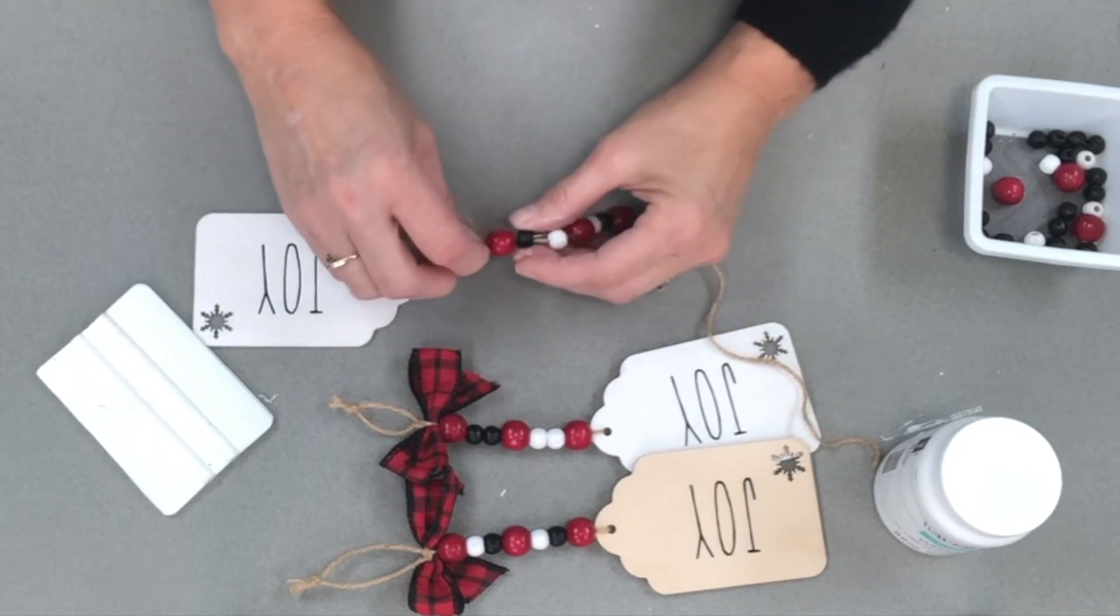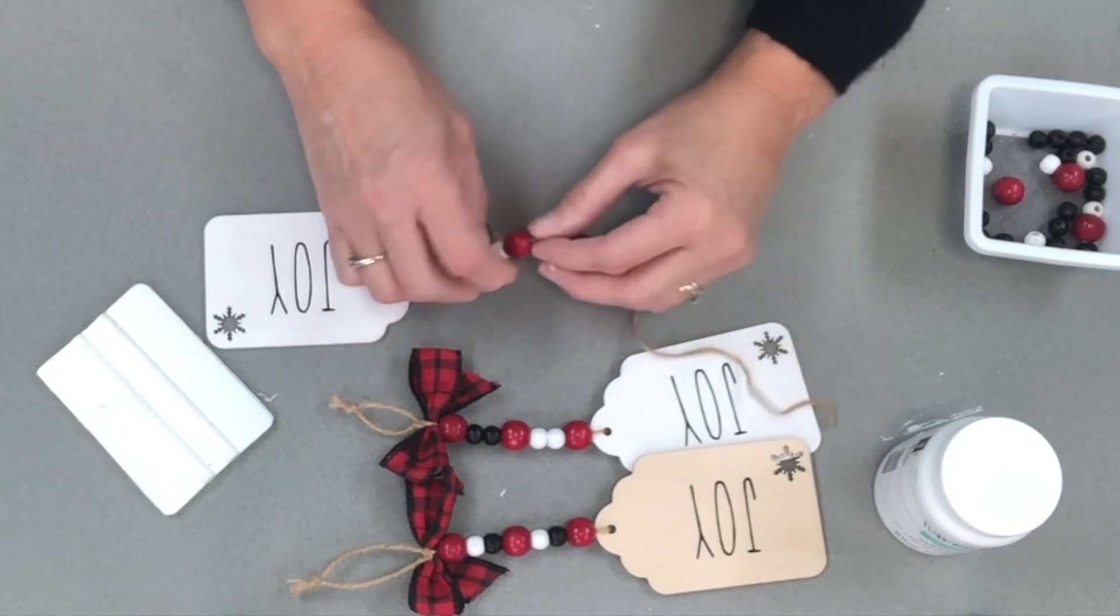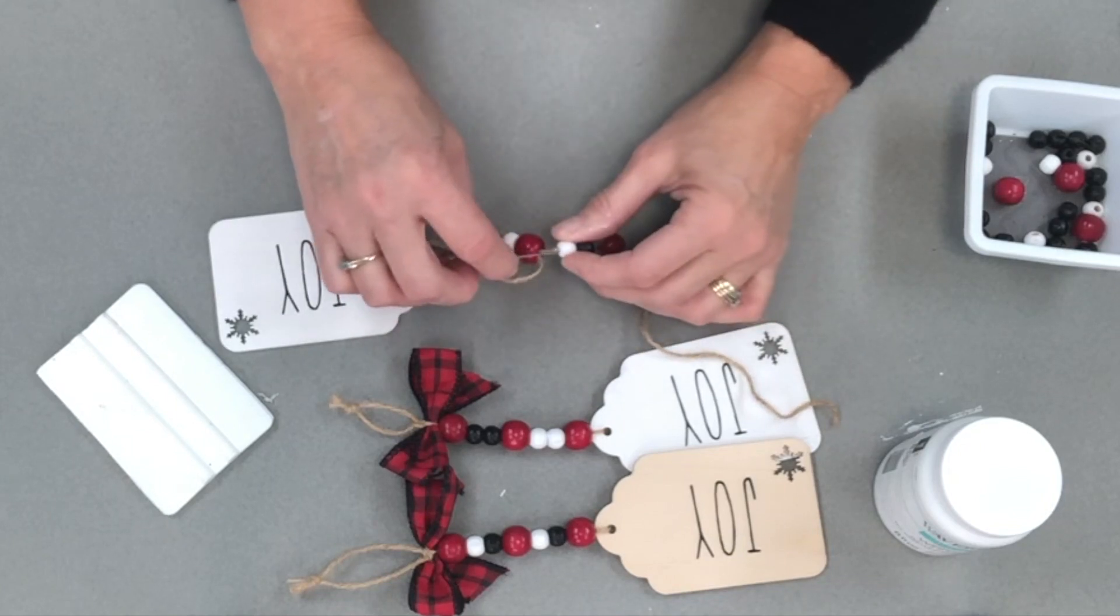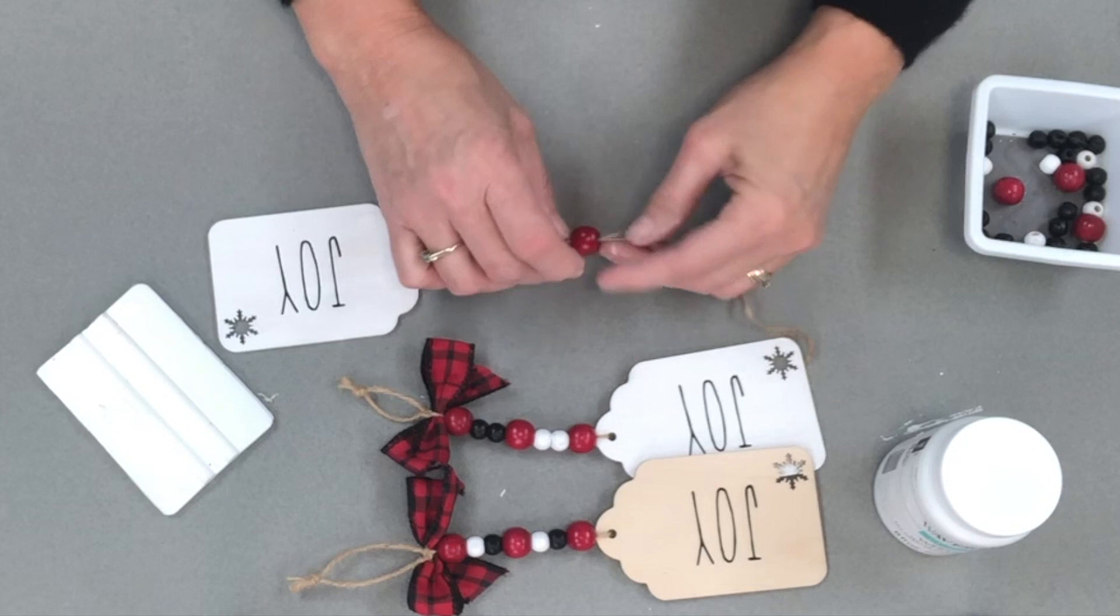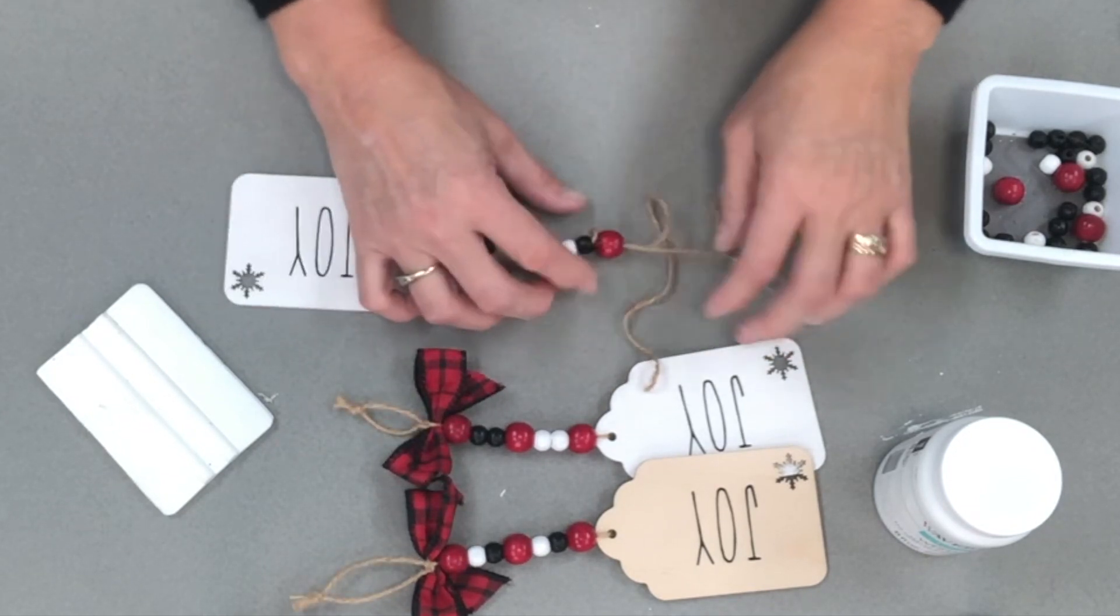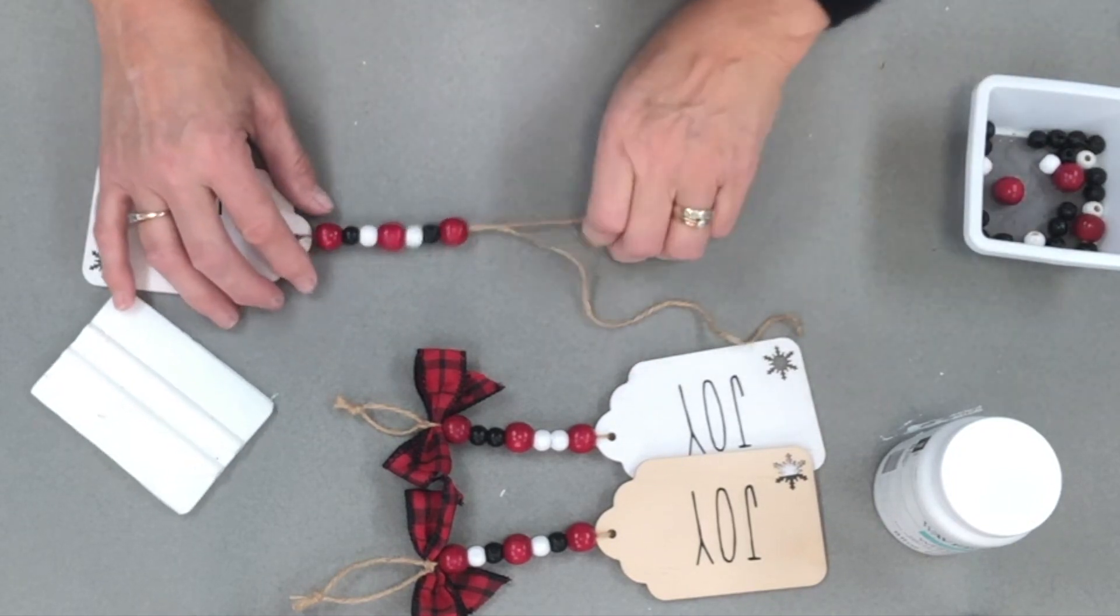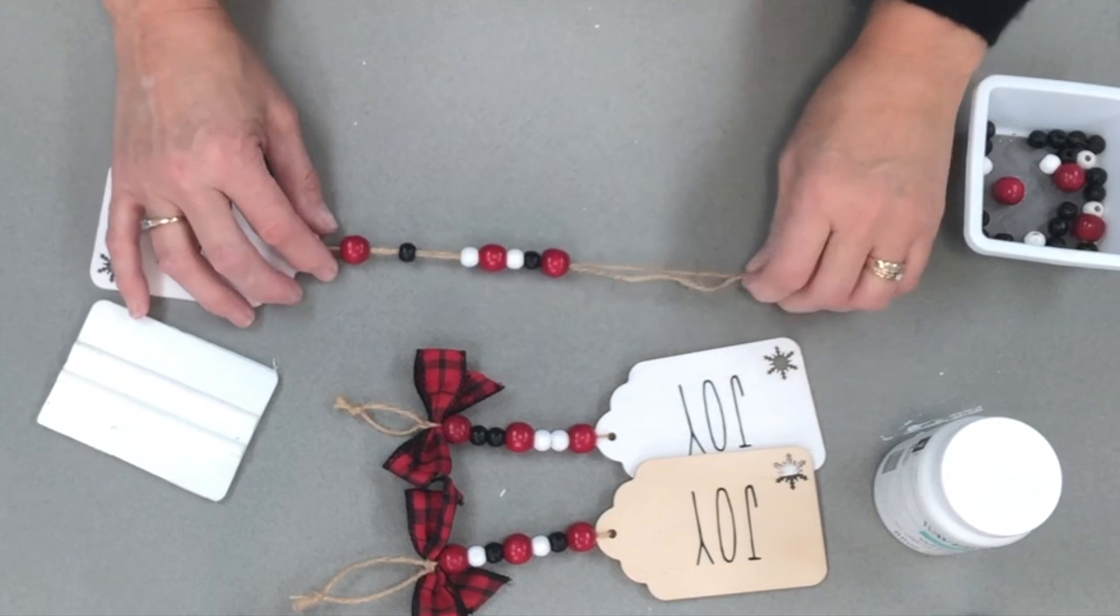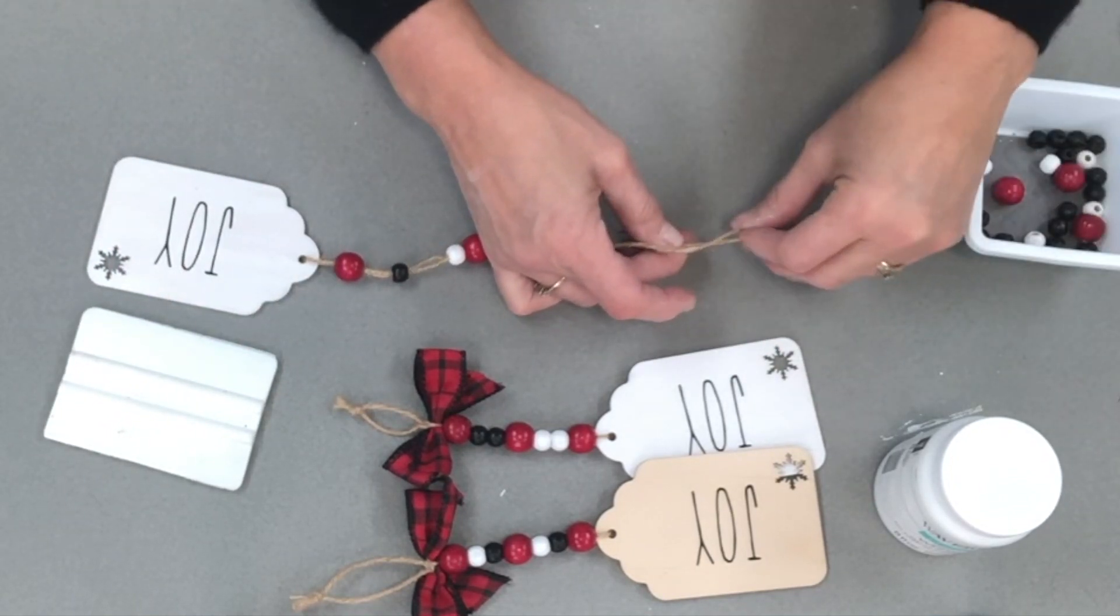Then I'm gonna take it through my hole in my tag and then I'm gonna go back through the beads. And this is where the needle really comes in handy. You can thread it without the needle. One way to do that would be to put a piece of tape on the end of it and then that way it's easier to get through. And then I just kind of size this up so it's the same size. I'm done with the needle now.